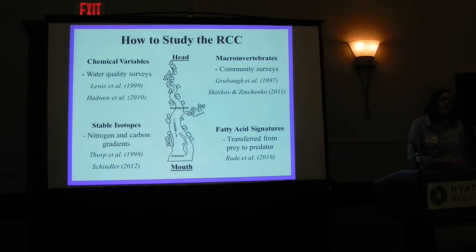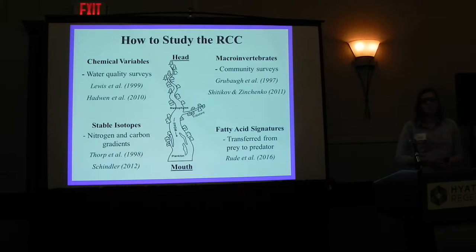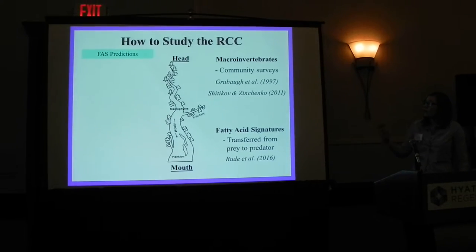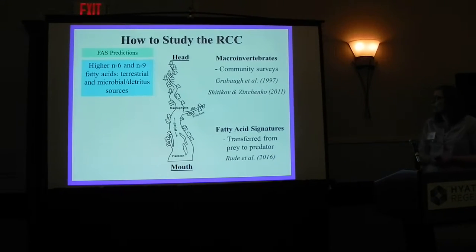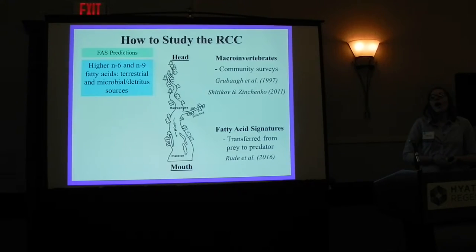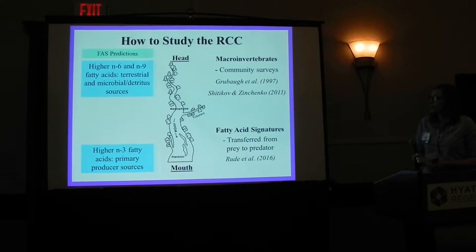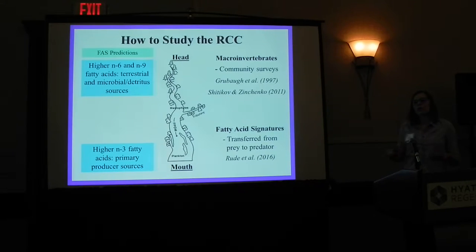Lastly, what I'm trying to use for my project is fatty acid signatures. I want to see if I could use fatty acid signatures to study this river continuum. This could be possible due to the fact that fatty acid signatures are transferred from prey to predator, so you'd be able to follow the change in diets throughout the river system. I predict the headwaters will be higher in N6 and N9 fatty acids from terrestrial and microbial sources, and down at the mouth I hope to find higher N3 fatty acids coming from primary producer sources, such as phytoplankton.